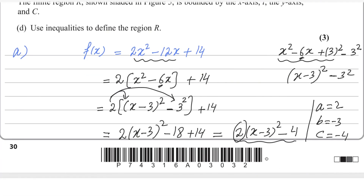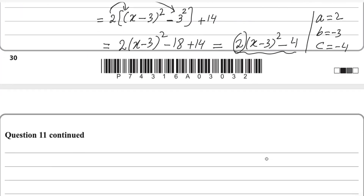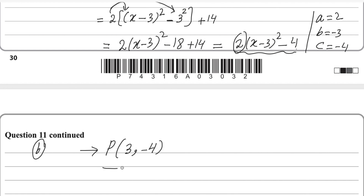Looking at our answer from the previous part, the coordinates of point P: since b = -3, we change the sign to get x = 3. The value of c is -4, so we keep it as is. Therefore the coordinates of point P are (3, -4). The second part is done.